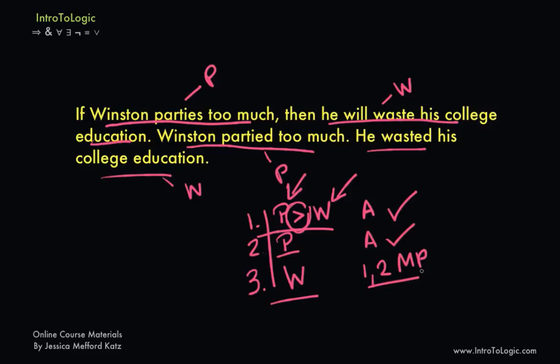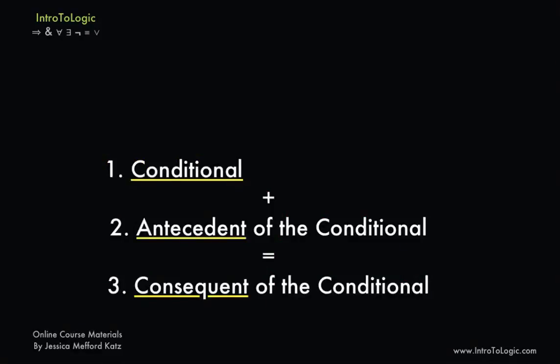So the form of modus ponens is generalizable. Whenever we see an argument that has the form if P then Q, and P, therefore Q, we know we've come across a modus ponens argument, or a form of modus ponens. And you could substitute any sentence or assertion for P and Q. So long as you follow this form, it will be the case that the argument is valid, and so it has a good form or structure of reasoning.